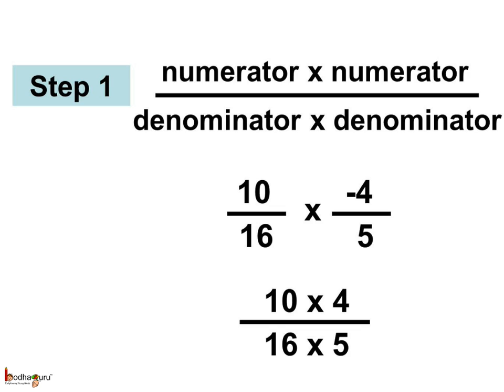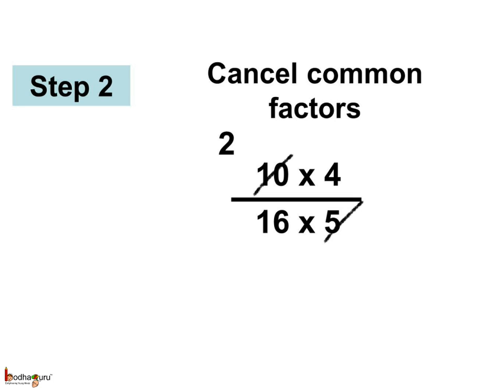So, the two simple steps to perform multiplication of rational numbers are: first, multiply all the numerators and multiply all the denominators. Like here, 10 by 16 multiplied by minus 4 by 5. Now coming to step 2, we cancel the common factors from the numerator and the denominator. 10 and 5 have the common factor 5, so we divide by 5. 10 divided by 5 is 2. Again, 4 and 16 have a common factor which is 4, so we cancel that factor. 16 divided by 4 equals 4.